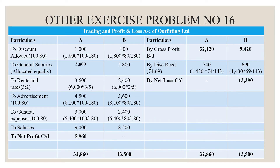Next we prepare the profit and loss account. On the credit side, gross profit brought down is 32,120 rupees for Department A and 9,420 rupees for Department B. Discount received: 1,430 × 74 ÷ 143 = 740 rupees for A; 1,430 × 69 ÷ 143 = 690 rupees for B. On the debit side, discount allowed is calculated on the closing stock ratio: 1,800 × 100 ÷ 180 and 1,800 × 80 ÷ 180, giving 1,800 rupees for each department.